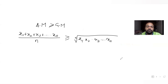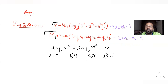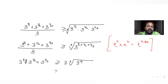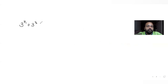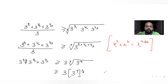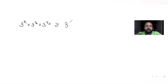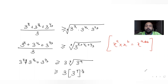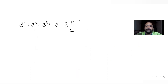We already know y1 + y2 + y3 equals a given value (9). Substituting, the right-hand side becomes the cube root of 3^9, which is 3^(9 · 1/3) = 3^3. Therefore, 3^y1 + 3^y2 + 3^y3 is greater than or equal to 3 · 3^3 = 3^4.